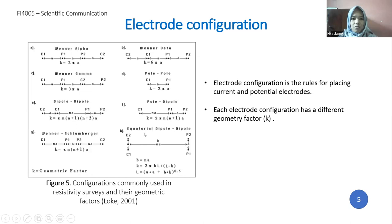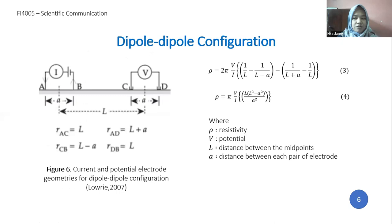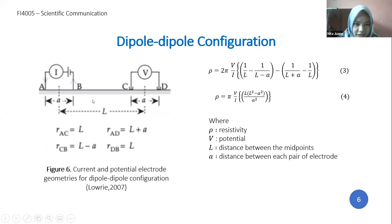In this study, I used the Dipole-Dipole configuration. In this configuration, the distance between each pair of electrodes is written as A. The distance from A to C equals the distance from D to B, which is L. The distance from D to A is L plus A, and the distance from C to B is L minus A.